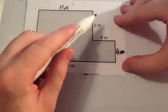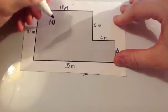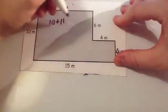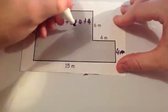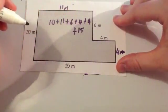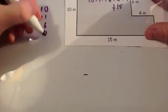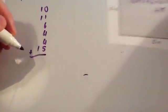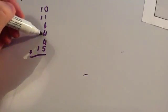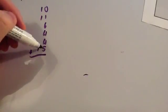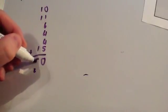Now we've found all the missing sides, we can add them together to find the perimeter of the shape. So we've got ten plus eleven plus six plus four plus four plus fifteen. Using the column method: zero plus one is one, plus six is seven, plus four is eleven, plus four is fifteen, plus five is twenty — carry the two. One plus one is three, plus the two is fifty. So the perimeter of this shape is fifty metres.